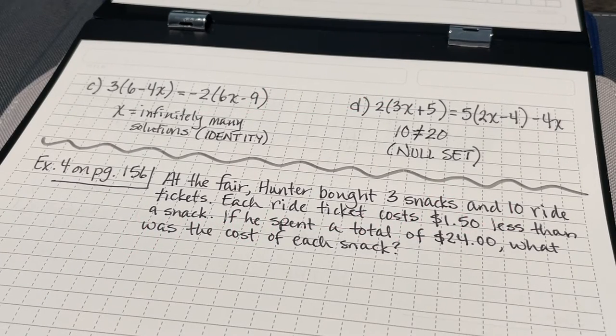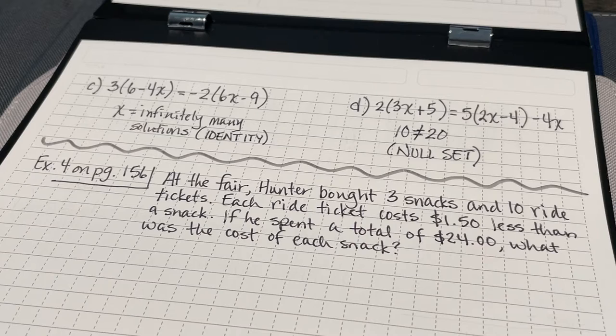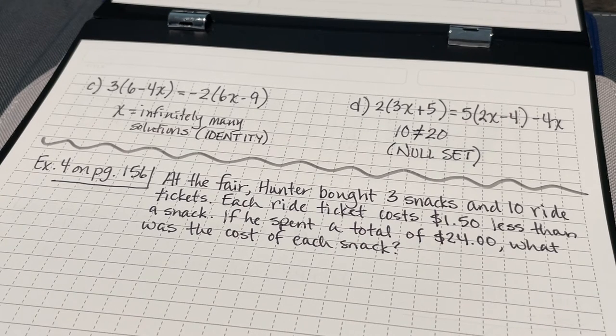In problem C, I get infinitely many solutions. This is an identity equation. Every value of X will make this a true statement. In D, 10 does not equal 20, so I know that this is a null set. There are no values of X that will make this a true statement.